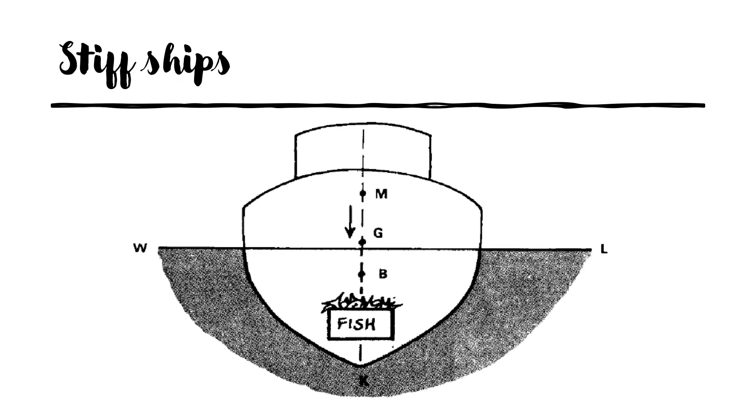In comparison to a tender ship we have stiff ships. In stiff ships, when weight is added low down in the vessel it lowers the center of gravity and consequently causes an increase in the vessel's metacentric height denoted by GM.